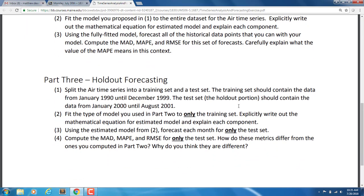Part three: we start to do holdout forecasting, which means we break it into a training set and a test set. The training set should contain data from January 1990 through December 1999. The test set, or holdout portion, should only contain data from January 2000 through August 2001.